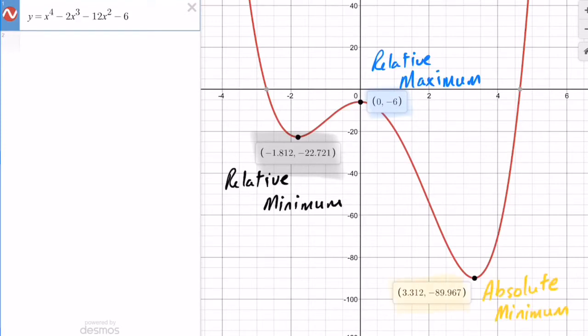And 3.312, negative 89.967 is an absolute minimum. The domain for every polynomial function is always all real numbers, but on this one the difference is going to be with our range, because it doesn't go up and down forever.